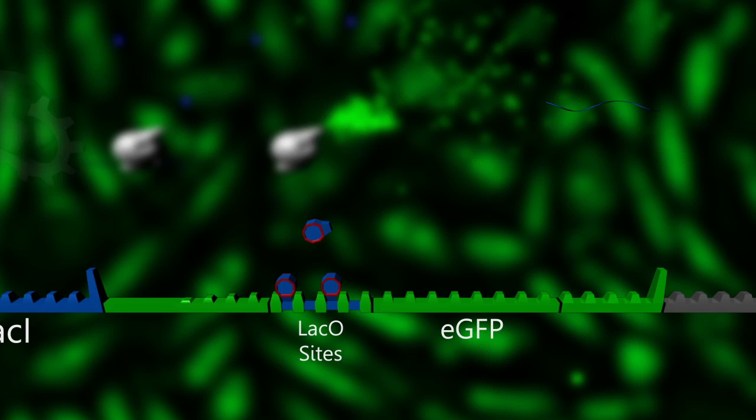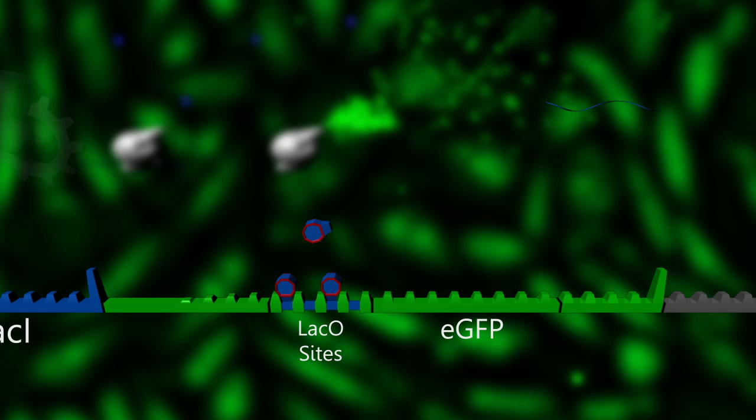As they bind, they prevent the passage of RNA polymerase and thus the transcription of the gene. In other words, this component blocks expression at the pre-transcriptional level.